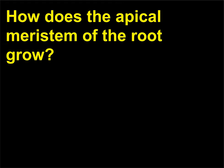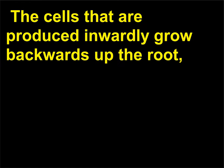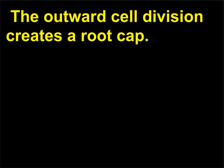How does the apical meristem of the root grow? The apical meristem of the root divides and produces cells inwardly and outwardly. The cells that are produced inwardly grow backwards up the root, while the cells that are produced outwardly grow forward in the direction the root is growing. The outward cell division creates a root cap.